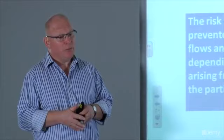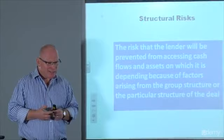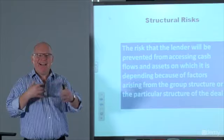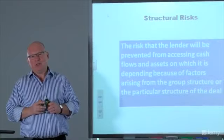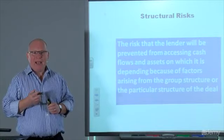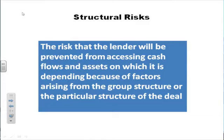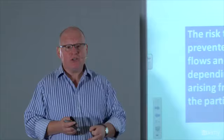The third part of risk that we need to think about is what's referred to as structural risk. Structural risk arises as a consequence of either the group structure that the firm is involved with, or from the deal structure — the particular lending function that we are associated with. The consequence of that structure is that the bank, the lender, is prevented from accessing either the cash flows or the assets that it is reliant upon to repay us. So to conclude: three aspects of risk — business risk, financial risk, and structural risk.